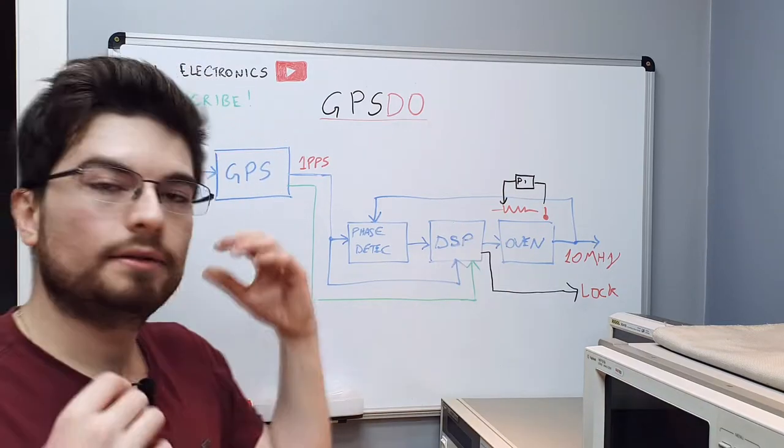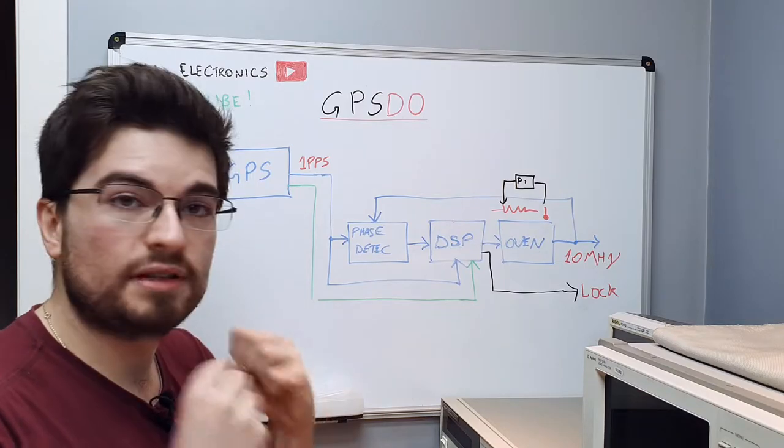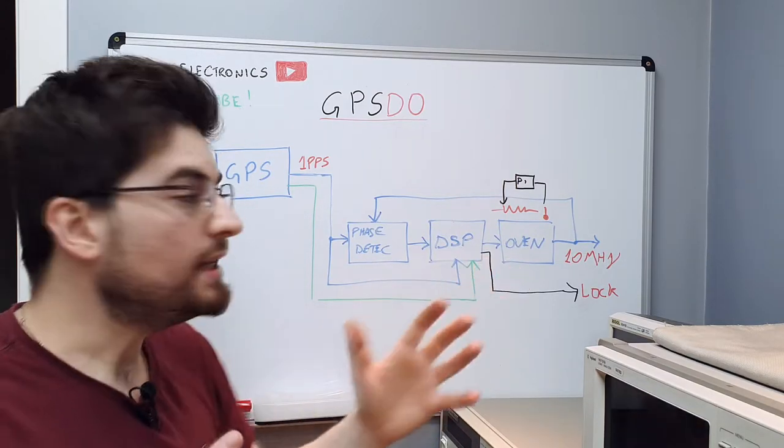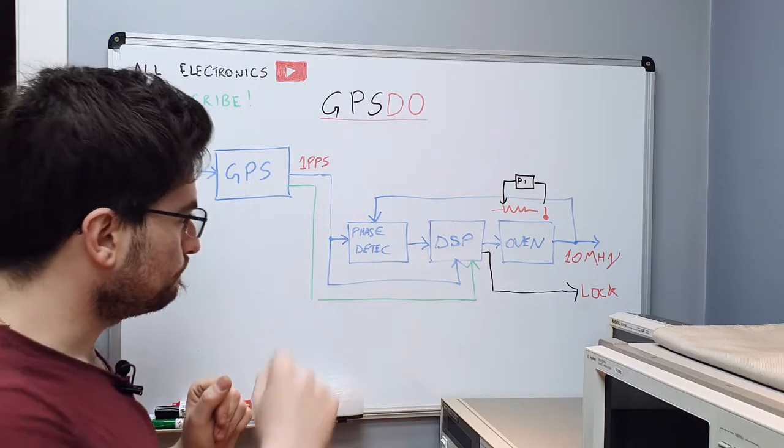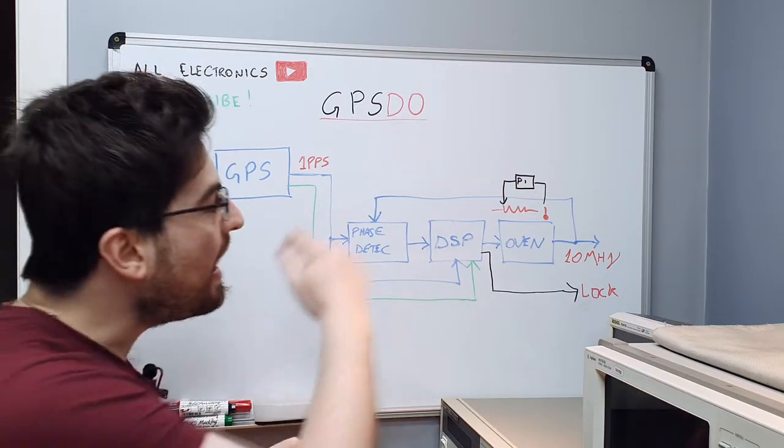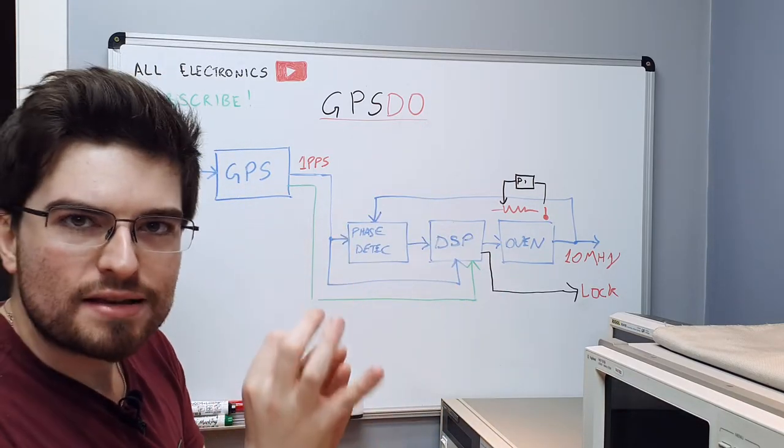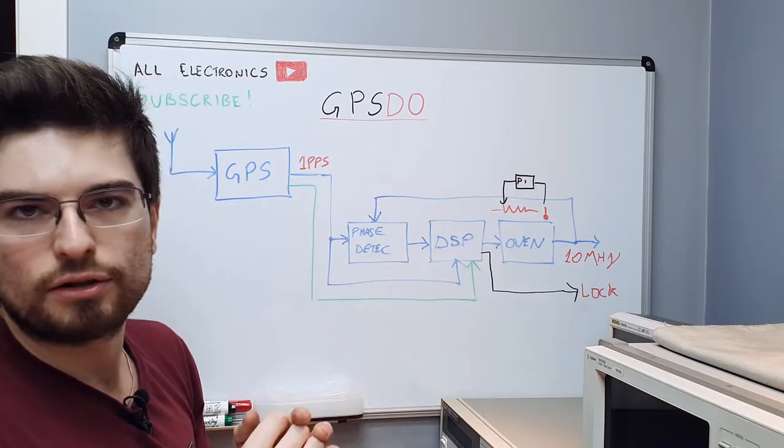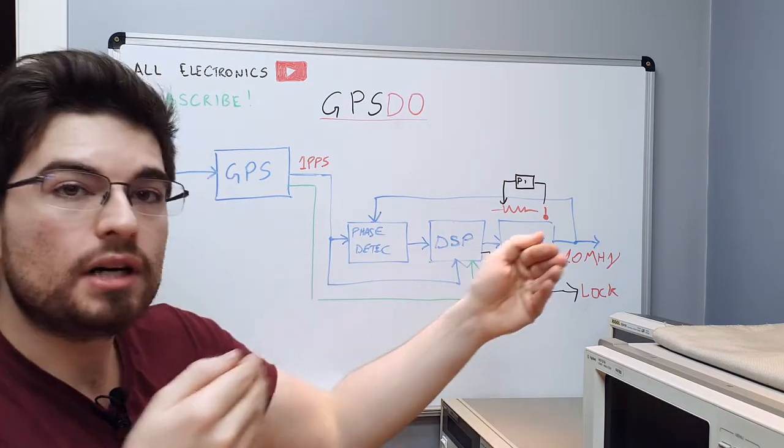PI controller that controls the heater to maintain a constant temperature here. The constant temperature of the crystal oscillator give us short time stability and we need to extend this period. For this we use the one PPS source from the GPS and close a loop around the oven controlling in small changes the phase of the oven oscillator of the crystal oscillator to maintain a long-term stability using the GPS as a reference.